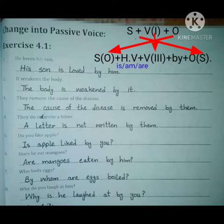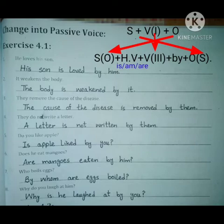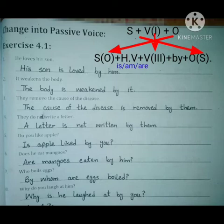Sentence number two: It weakens the body. Its subject is 'it,' weakens is the verb, the body is the object. The body comes to the start, and with 'the body' the helping verb 'is' comes. After 'is,' we put the third form of the verb — 'weakened' — then 'by it.' Result: The body is weakened by it.